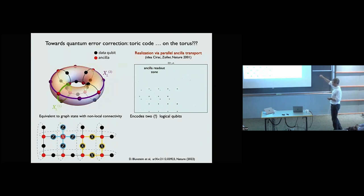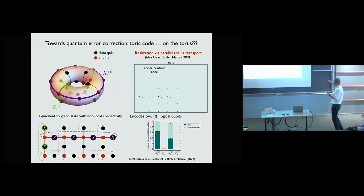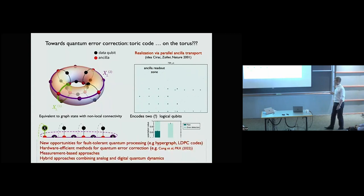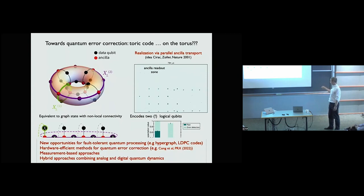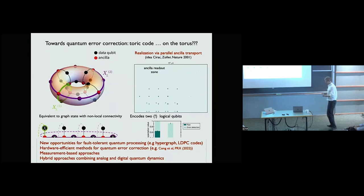The syndrome measurement shows one logical qubit correcting to one and another correcting pretty well. This opens the door for many new opportunities for encoding and fault-tolerant processing. We are looking at hypergraph codes and LDPC codes, hardware-efficient error correction methods, measurement-based approaches, and hybrid approaches combining analog and digital evolution. A key scaling advantage: to encode two logical qubits in this movie, the number of control parameters needed is strictly two, which for the first time provides a solution to the control problem for large numbers of logical qubits.